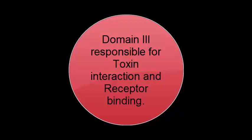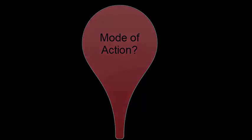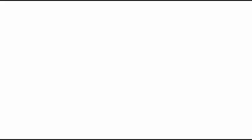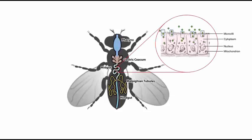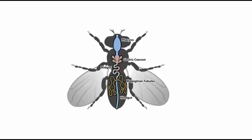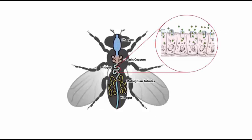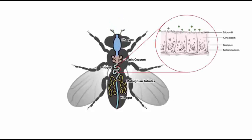Now let's see how this delta endotoxin affects the midgut of the insect. It involves a specific interaction between the protein and the insect larva. After ingestion by the insect larva, the protein crystals are solubilized in the midgut — similar to crystal sugar dissolving as you drink something. Once fully ingested into the stomach, the protein is solubilized and then cleaved into two fragments, and one of the active fragments interacts with the high-affinity receptors of the midgut.